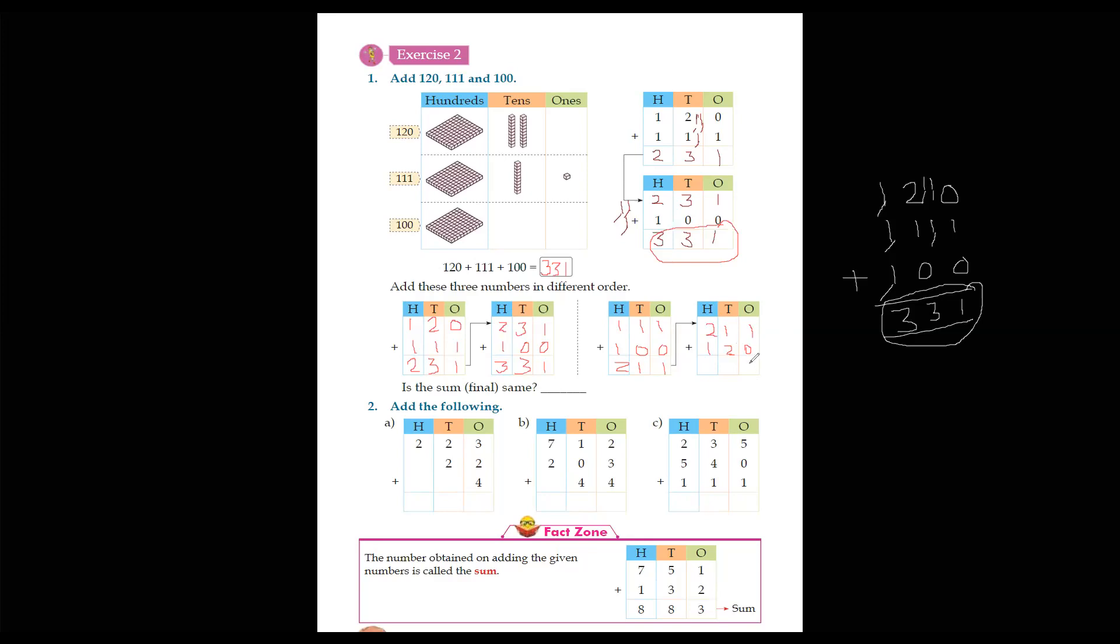Now add 1, 0, 1. 1 plus 2 is 3. 2 plus 1 is 3. Did you understand? Very good. Now let's go. Is the sum final same? What answer came to everyone? Three hundred thirty one.